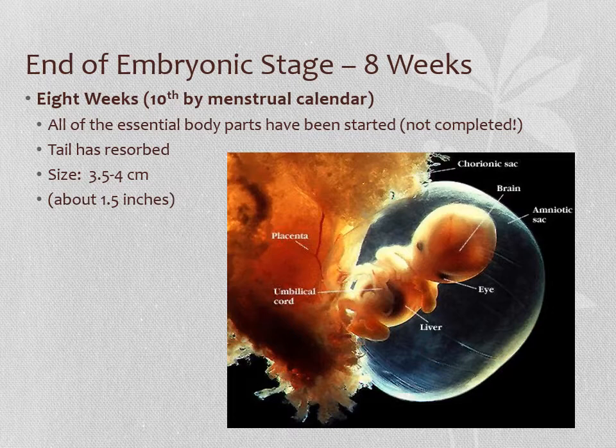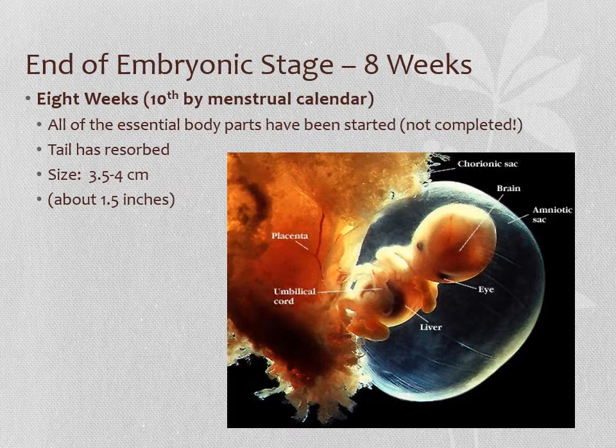By the time we get to eight weeks, or ten weeks pregnant, all of the essential body parts have been started — we have the beginnings of the eyes and the ears and the liver and the intestines and the arms and the legs. The tail has actually been resorbed, which is pretty cool. And now we have something that looks fairly humanoid, except it's still very translucent and see-through and the head is ginormous and the face looks rather alien-like. We're about one and a half inches in size at the end of the embryonic stage.